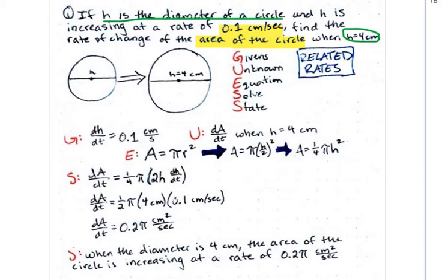So let's go through all of those steps. So first off, listing out our givens, well, we're given the rate of change of the diameter. We're noted that the diameter is h. So dh/dt is obviously, as we see up here, 0.1 centimeters per second.